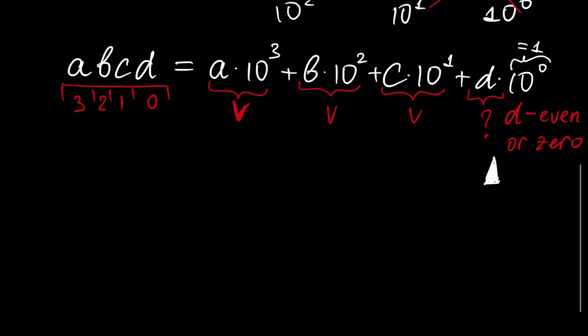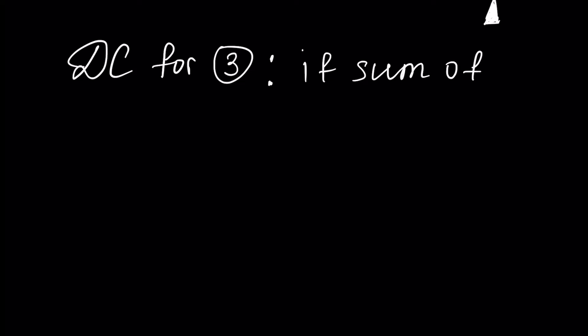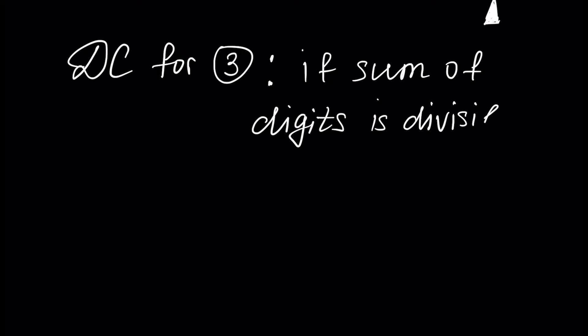Next, let's talk about the divisibility criteria for number 3. The result is: if the sum of the digits of the number is divisible by 3, then the number is also divisible by 3.